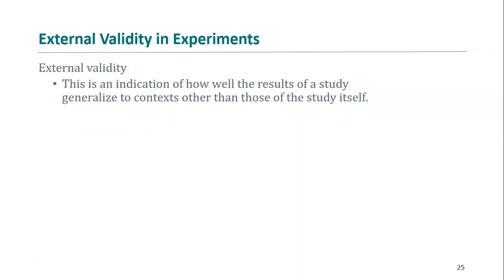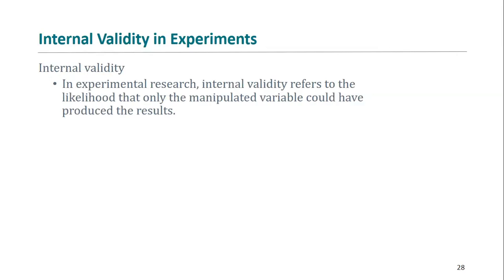External validity refers to the degree to which the results of the current study generalize to other contexts and other study populations. This is why it is very important to select your population of study carefully. Internal validity refers to the likelihood that only the independent variable that you manipulated could have produced the results in this experiment. Controlling internal validity means that you are relatively certain that the manipulations you made to the independent variable led to the changes in the dependent variable in your experiment.